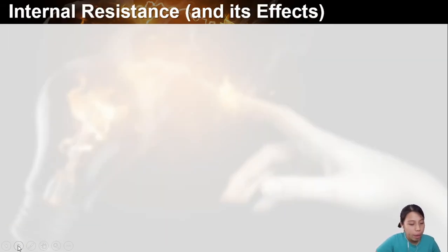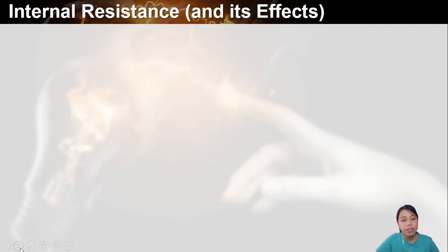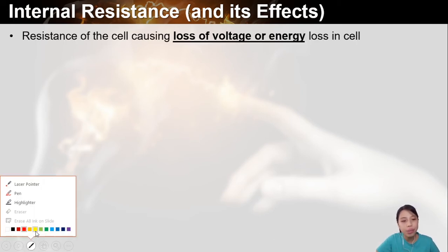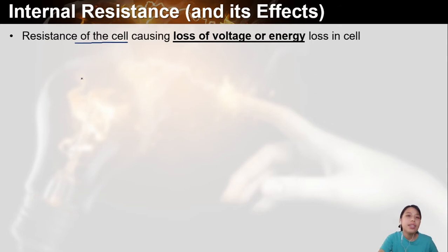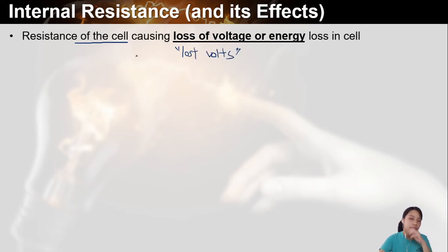So how do you define this? What is internal resistance? In a sentence: internal resistance is the resistance of the cell — inside the battery itself. And that resistance causes a loss of voltage, also known as lost volts. You'll see past year papers talk about 'lost volts' or 'energy loss.'